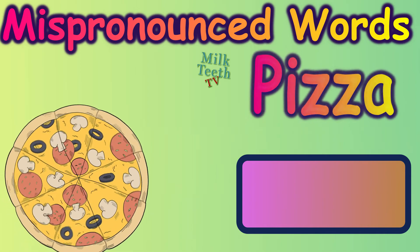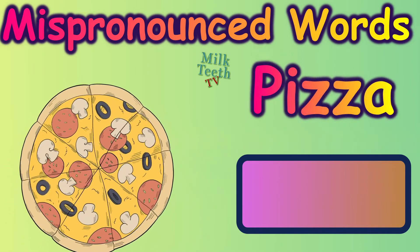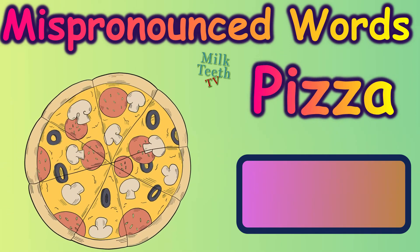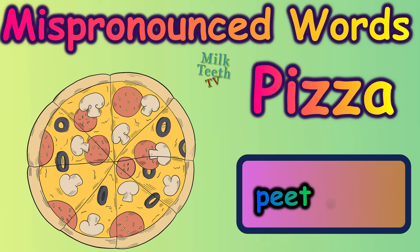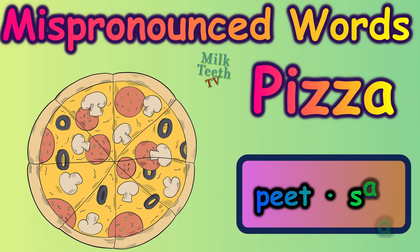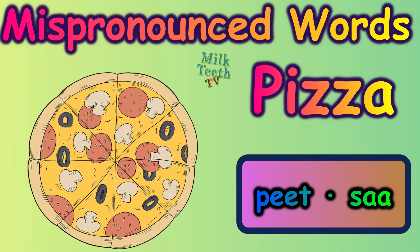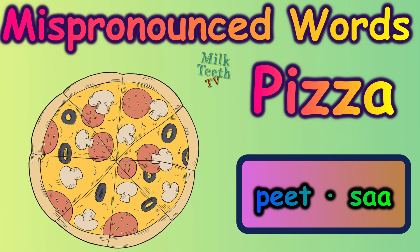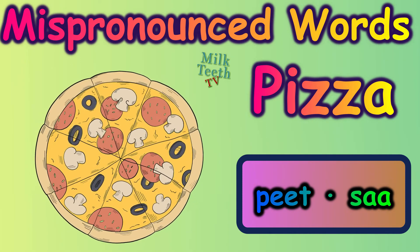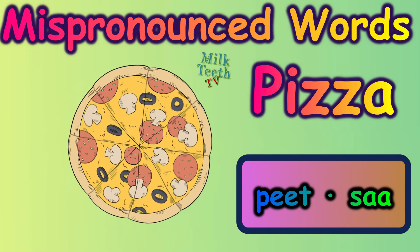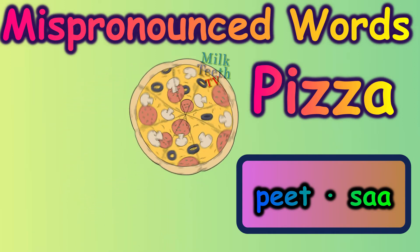It sounds funny when a kid says they want a pizza. Well, kids are cute — they don't know the correct pronunciation, but you must learn it. It's not pizza. It's pizza. The Z syllable in this is pronounced like 'ts.' We call it pizza.